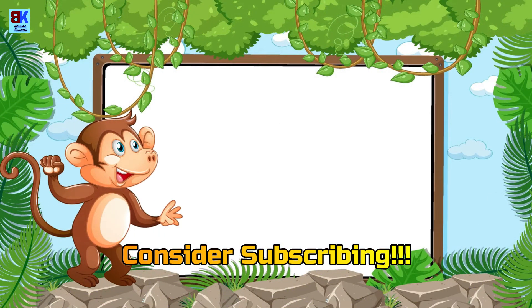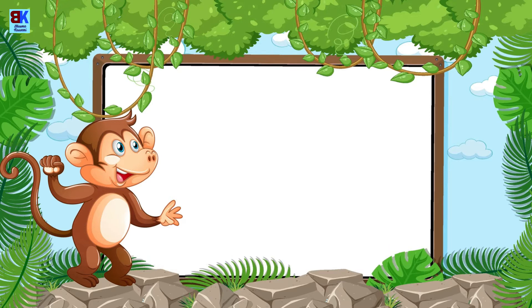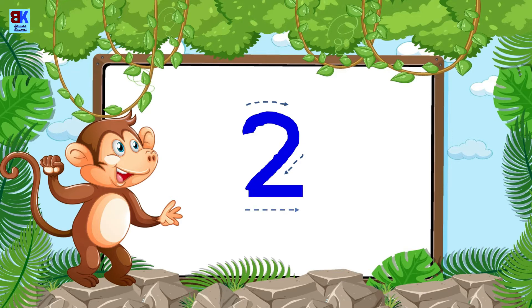First, let us learn how to write number two. Make a curve like this, and then make a straight horizontal line. Try one more time.